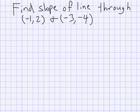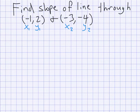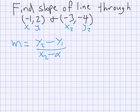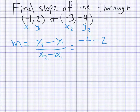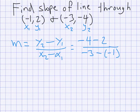This question wants us to find the slope of the line passing through two given points. We'll use the slope formula. I recommend labeling the points first: call the first one (x1, y1) and the second (x2, y2) — that helps when plugging into the formula. Our slope formula is m equals y2 minus y1 over x2 minus x1. So y2 is negative 4, minus y1 which is 2, on top. On the bottom, x2 is negative 3, minus x1 which is negative 1 — I'll put that in parentheses.